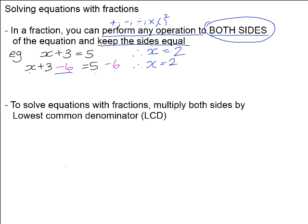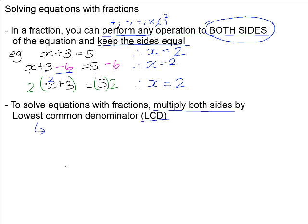Now let's say I choose to multiply both sides of the original equation. So if we take x plus 3 equals 5 and multiply both sides by 2 — is my value of x still 2? Let's check: substituting 2 for x, 2 plus 3 is 5, multiplied by 2 is 10. And 5 multiplied by 2 on the right-hand side is also 10. So x is still equal to 2. I can use this rule to solve equations with fractions by multiplying both sides by the LCD — the lowest common denominator — which cancels out our denominators and gets rid of the fractions.